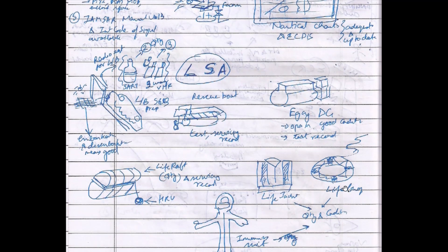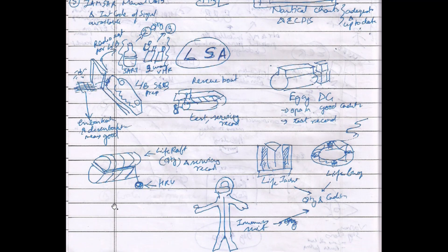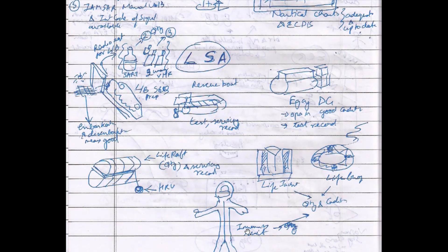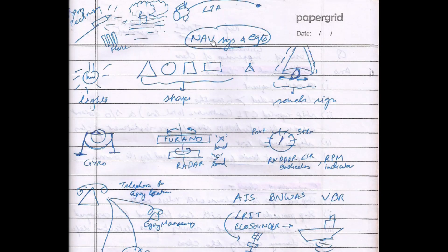For the emergency generator, the operation condition and test records — including PMS records — should be elaborated. For life rafts, you talk about the quantity, servicing records, condition of the HRU, whether it was serviced or replaced. Similarly, for immersion suits, life jackets, and lifebuoys, the quantity, condition, and records have to be described.